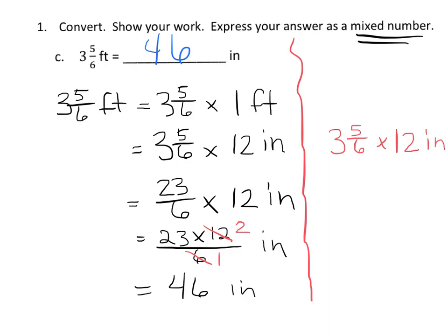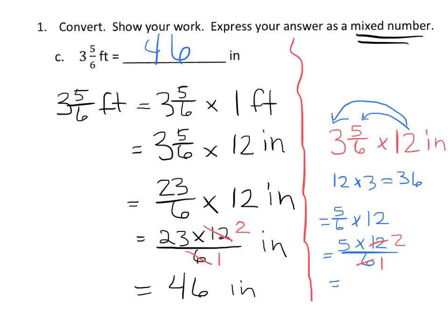Now, what some students like to do is they like to solve this using the distributive property. So that would be 12 times 3, and then 12 times 5-sixths, and then add those two answers together. So the first would be 12 times 3 is 36, and then 5-sixths times 12. So 5-sixths times 12 is 5 times 12 over 6. And then we see that 12 and 6 have our common factor of 6. So dividing them both by 6, 12 and 6 become 2 and 1. And then our answer there, 5 times 2 is 10 over 1, so the answer is 10.